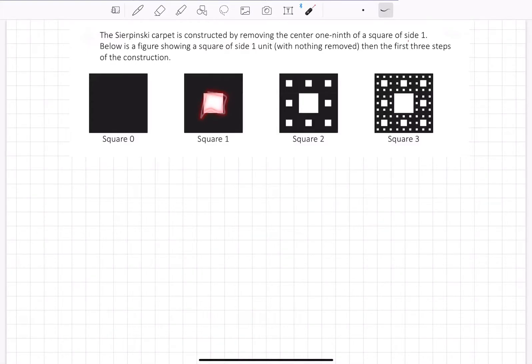So here we've removed the center one-ninth. Here we've left this bigger, the center one-ninth removed, and then one-ninth of each of these. And then again, the center one-ninth of each of these eight remaining ones, and then each of these eight remaining ones has eight more center ninths taken out of it. What is the area of this first one? Well, this is one unit here. So all of these are one unit, so the area here is one unit squared.